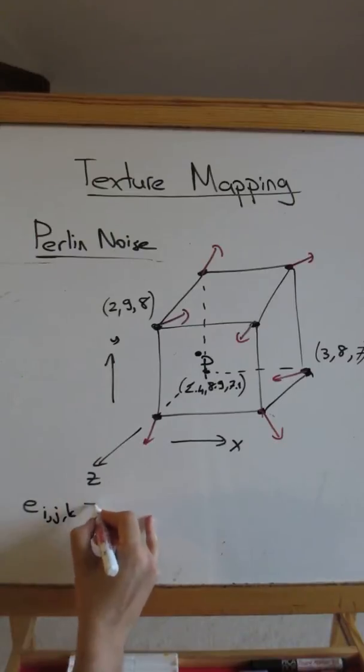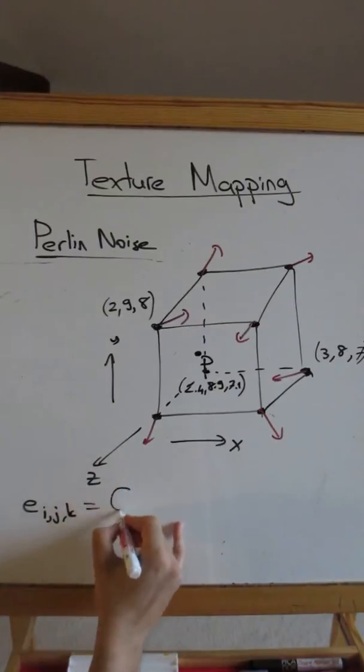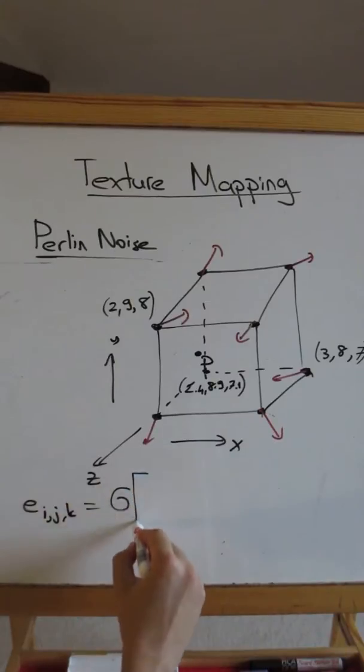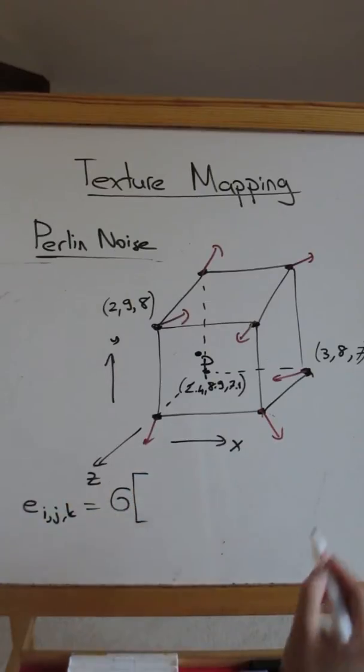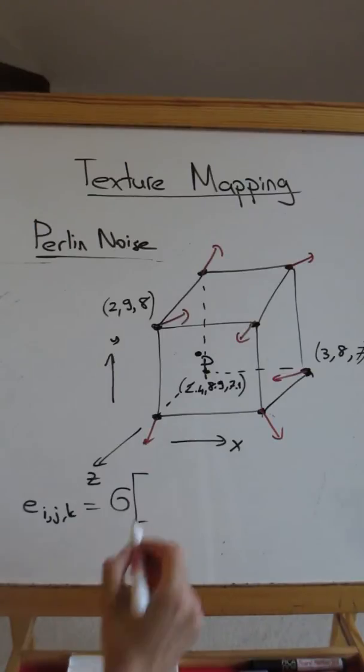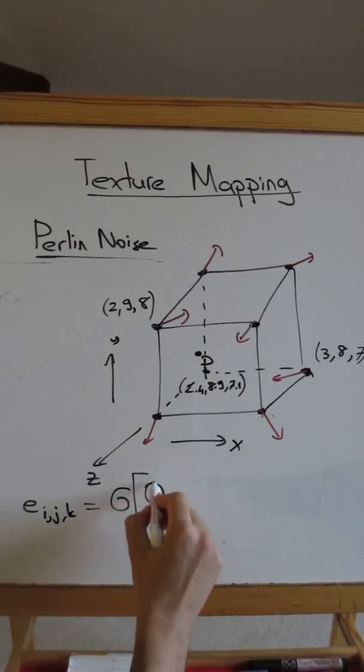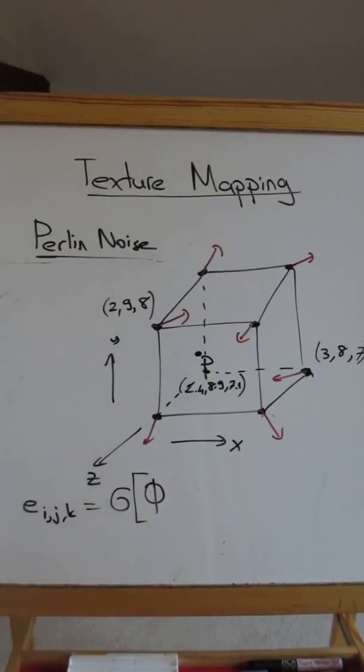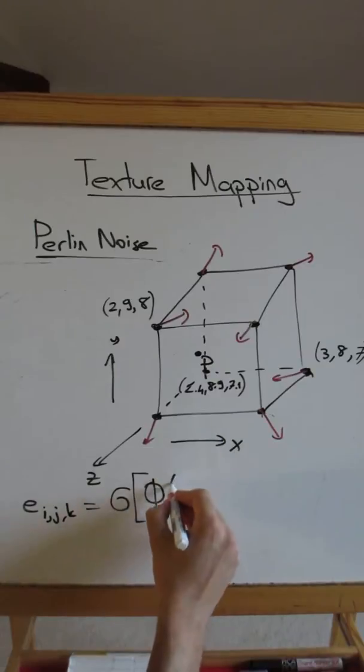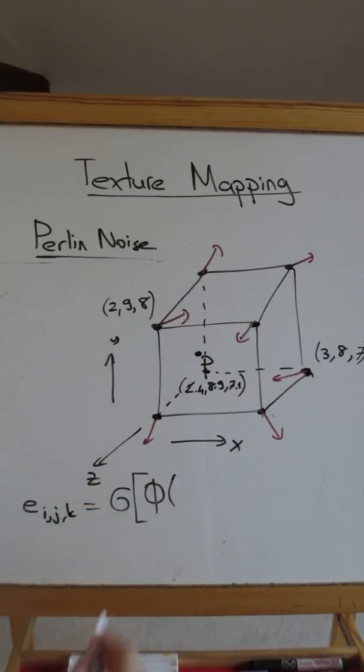So to compute this, we are going to look it up from the gradient vector table. Now, but what will be the input to this table? So this is where the hashing comes into picture. We are shuffling actually, so we are making a lookup but we will randomize this lookup. So we are using these shuffling functions.